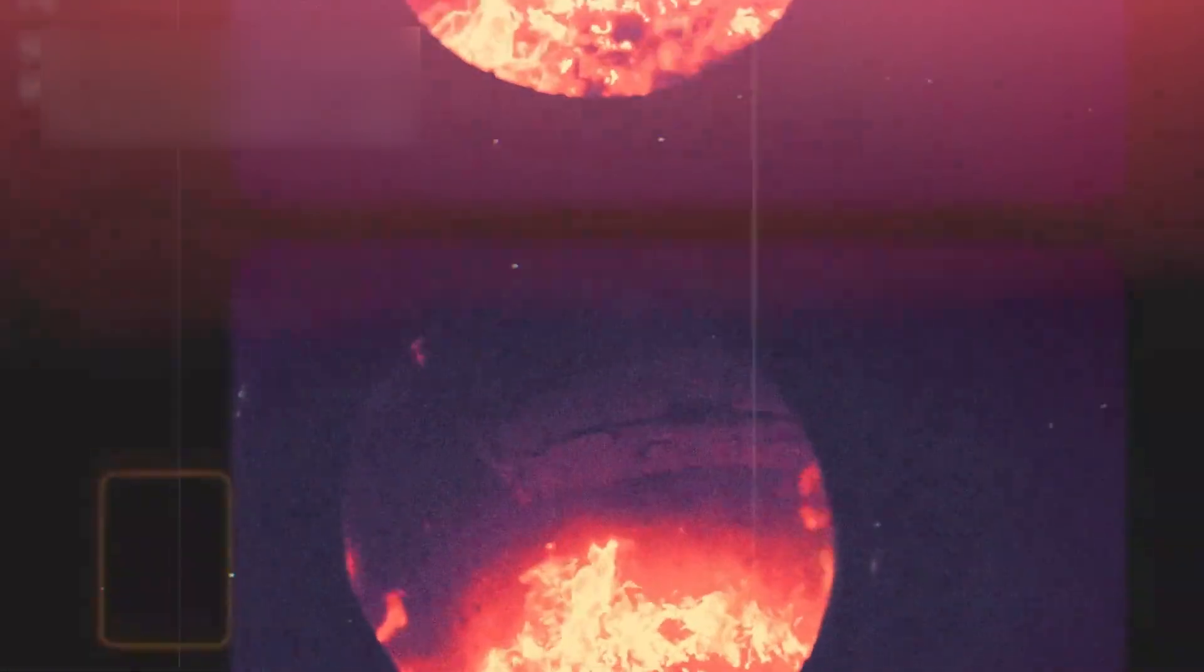Supporting this idea are signs of ongoing geological activity. When NASA's New Horizons spacecraft flew past Pluto in 2015, it revealed a surface crisscrossed with fractures, ridges, and faults.